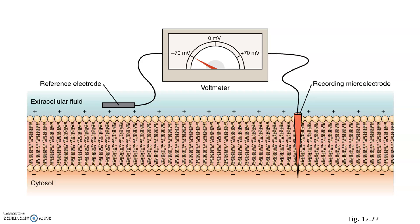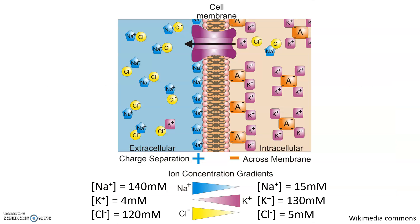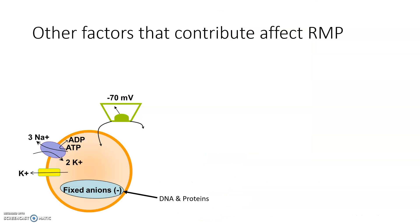Some of you might be thinking, why is it so negative? Why isn't the resting membrane potential at a neutral zero? There are a few factors to consider. First, there is an unequal distribution of charged particles on both sides of the membrane. In this image, you will see that sodium and chloride have a higher concentration on the outside than on the inside of the cell. Conversely, potassium has a higher concentration on the inside compared to the outside. Second, there are negatively charged molecules such as DNA and protein that are stuck inside the cell, which also make the resting membrane potential more negative.